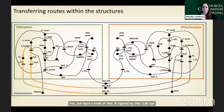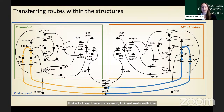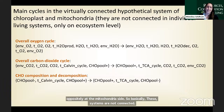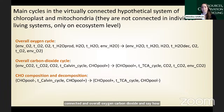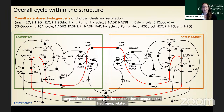Regarding the transferring routes: in the chloroplast side it starts from environmental H₂O and ends with environmental O₂, and oppositely at the mitochondrial side. Basically these systems are not connected at this level, but at an ecosystem level they are connected, and the overall oxygen, carbon dioxide, and CHO composition and decomposition pools are interrelated. Similarly, the hydrogen-related cycle within this system forms a complete cycle at the ecosystem level.